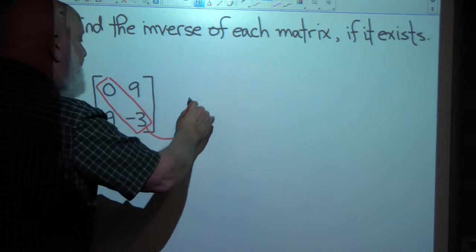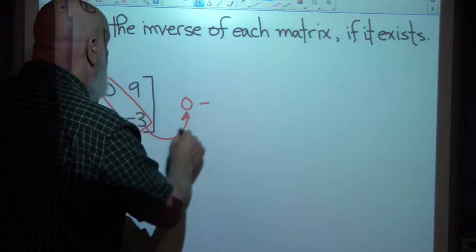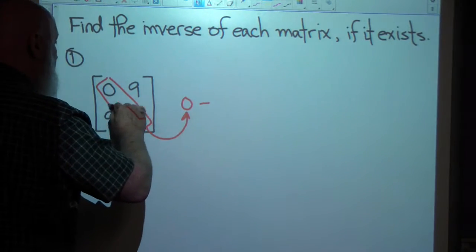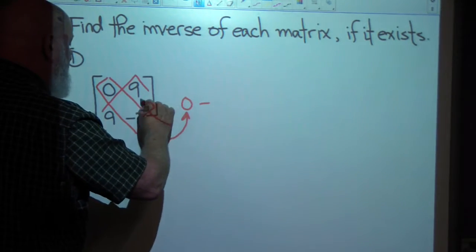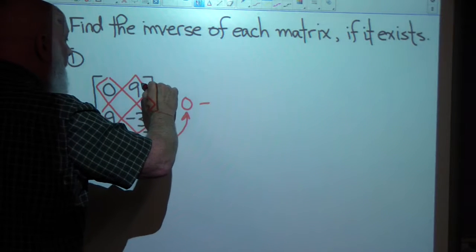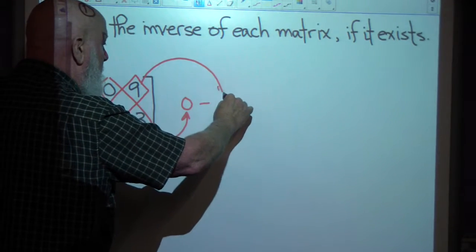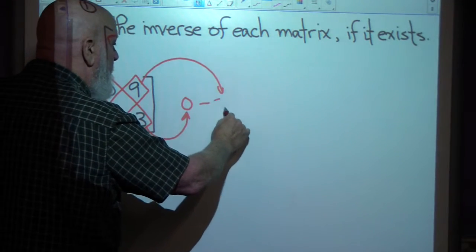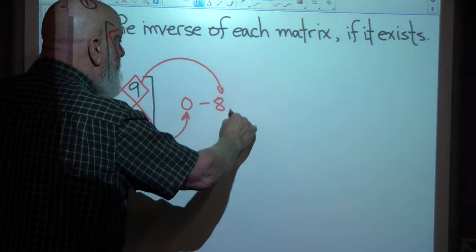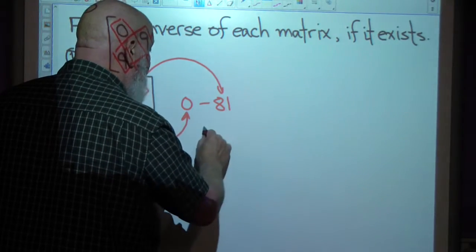Let's see if we can find the inverse of this one. Finding the determinant: this gives me 0, minus this which gives me 81. So my determinant is negative 81.